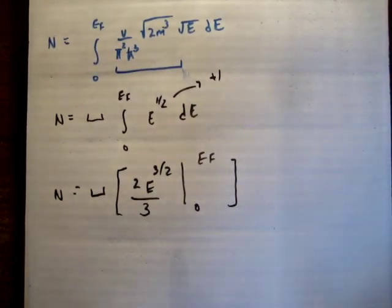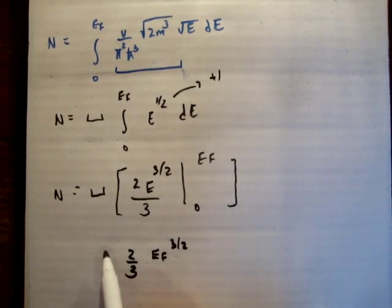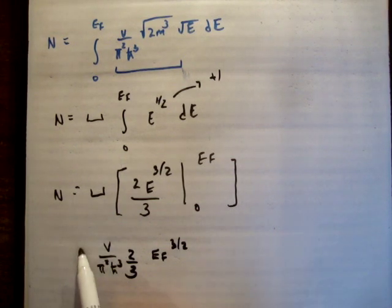So what do we get here? Well, of course, when you have zero, that's not going to matter. So what we get is two-thirds, EF to the three over two, and then we get our constants.